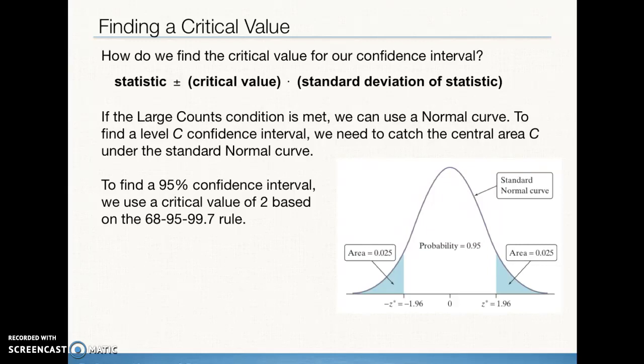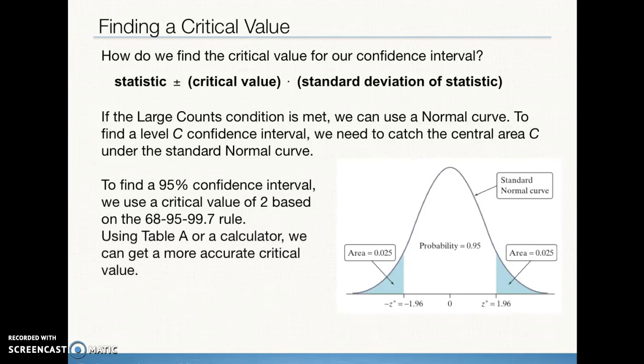For a 95% confidence interval, using the 68-95-99.7 rule, negative 1.96 is very close to 2 — about two standard deviations from the center. We estimate it as 2 in Chapter 2, but the precise value is 1.96. We can find the z-score using Table A, the bottom of Table B, or our calculator with inverse norm — using area to find the z-score — to get our critical value Z-star.